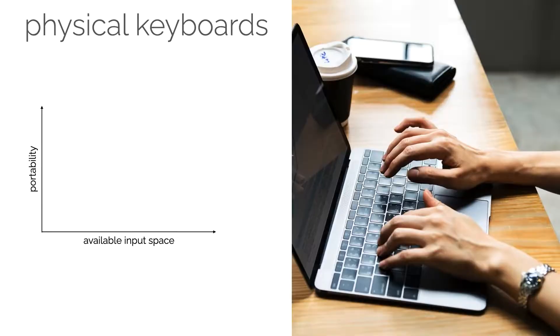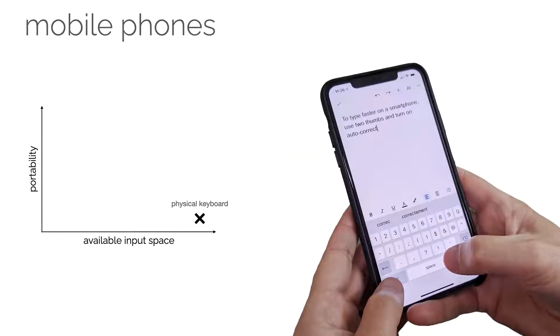If we look at the common ways we enter text today, we find that popular solutions cover the ends of two dimensions: available input space and portability. Physical keyboards remain the most popular choice when it comes to entering large amounts of text. When you type on a keyboard, you can use both hands and all ten fingers, and users can support and rest their arms on the table surface, which helps with prolonged typing.